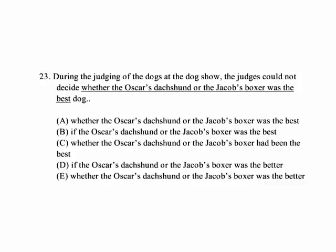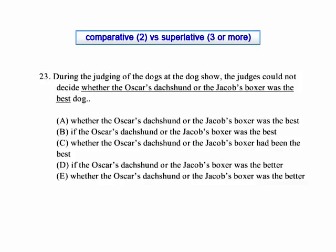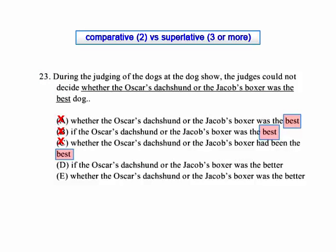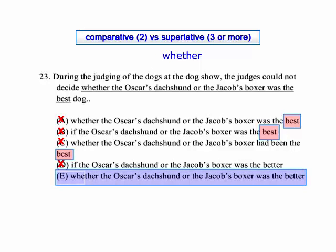Number 23. 'During the judging of the dog show, the judges could not decide whether the Oscar's dachshund or the Jacob's boxer was the best dog.' We're comparing the dachshund and the boxer — two dogs, not three or more — so we need the comparative rather than the superlative. We want 'which one is the better dog.' Since A, B, and C contain 'the best,' we look at D and E. The difference is 'if' vs. 'whether.' 'If' introduces a condition; 'whether' is used when deciding between alternatives. So E is our correct answer.